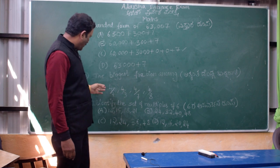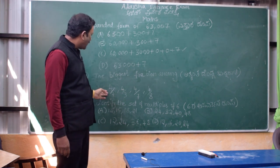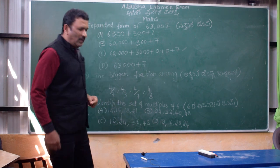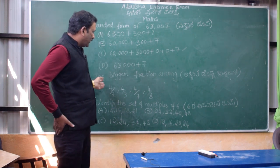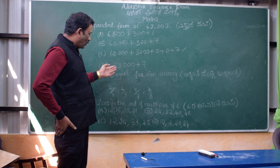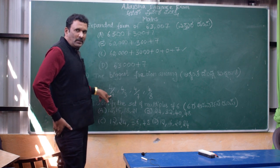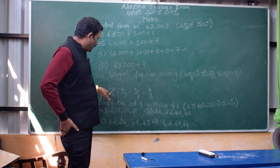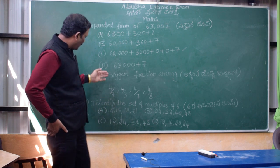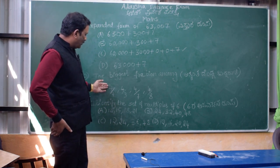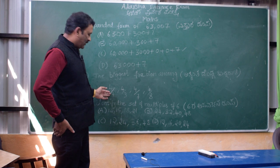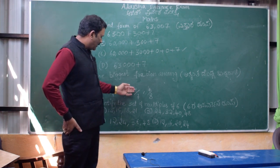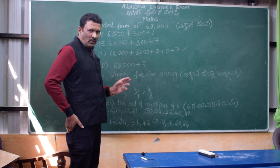So the options are 4 by 9, 4 by 3, 4 by 7, 4 by 8. You can choose the right answer. If you choose 4 by 8, you can choose 5 by 9. Don't get confused.